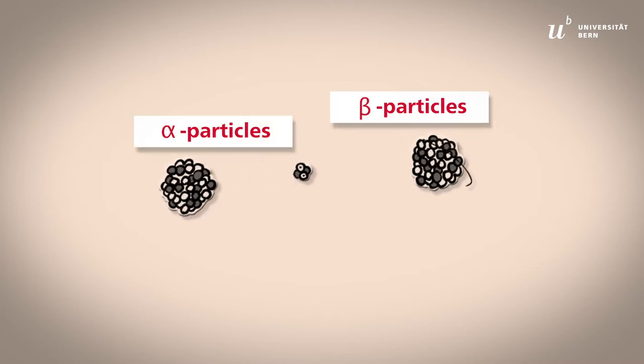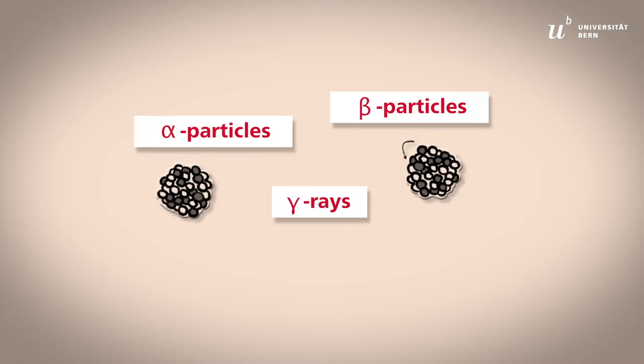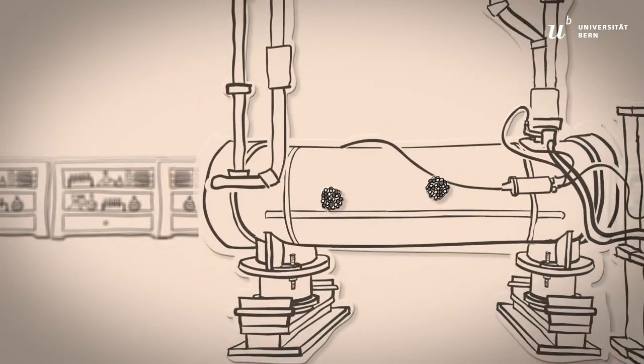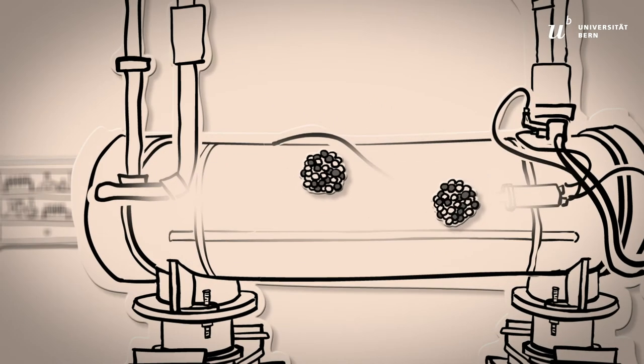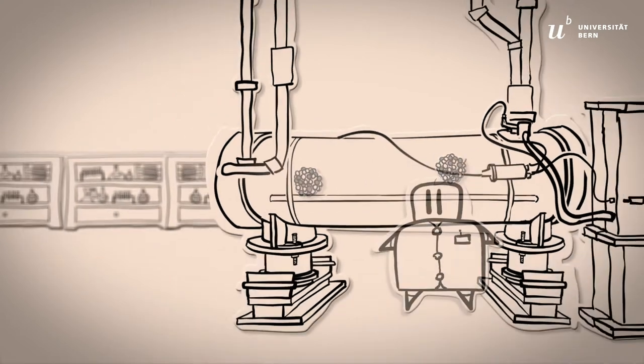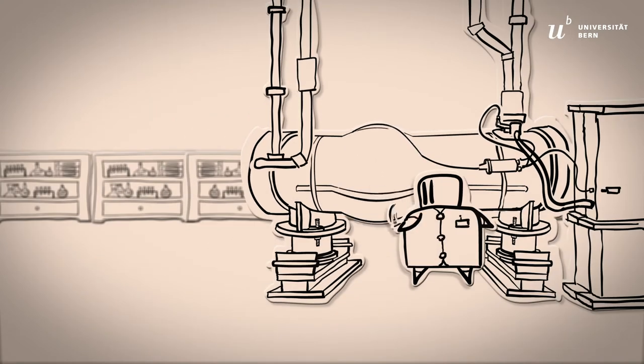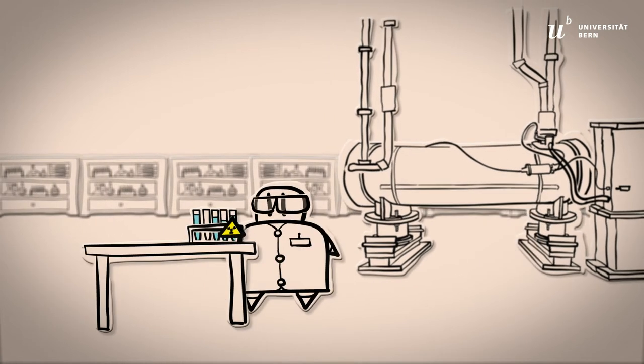Radioactive sources emit ionizing radiation in the form of alpha and beta particles, as well as gamma rays. They are divided into sealed and unsealed sources. Sealed sources are designed to prevent the release of radioactive substances. Unsealed radioactive sources are not encapsulated and pose the risk of contamination.